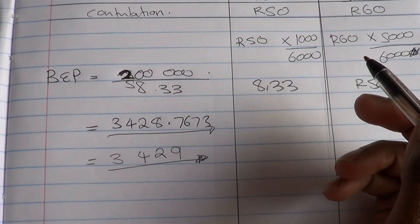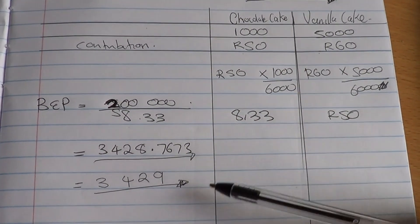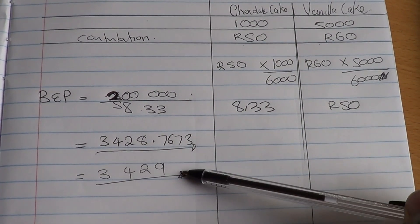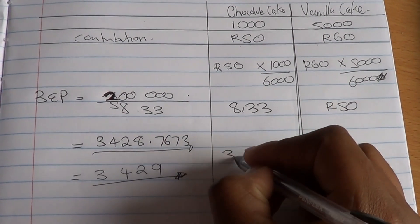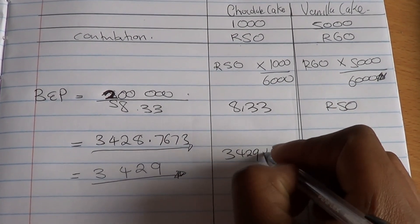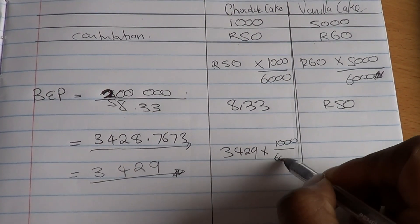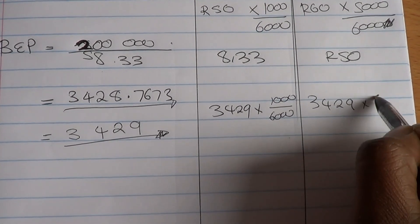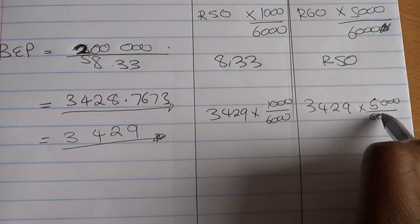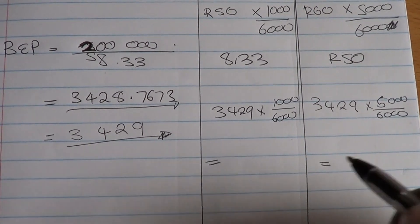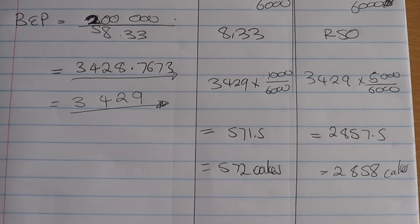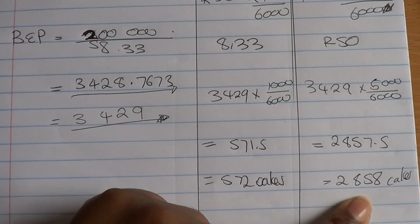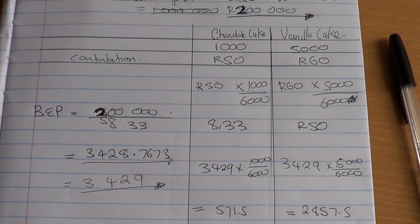Eventually you want to split exactly how much is the break-even point for the chocolate cake and the vanilla cake. All you do is take this amount and split it according to the sales mix ratio. That gives me the final answer — I got 571.5, which, remember, you always round up.